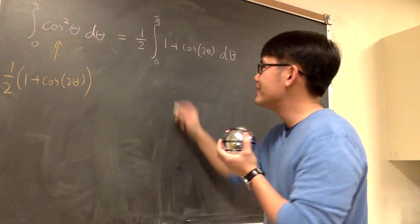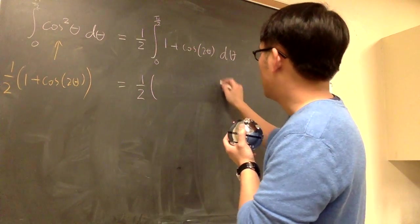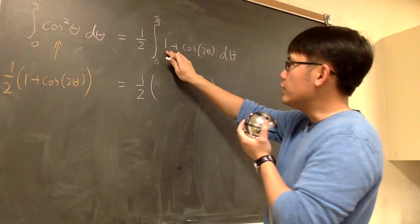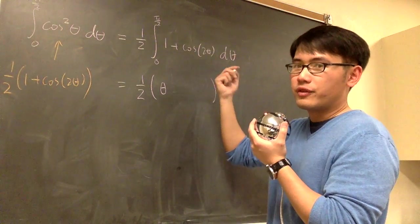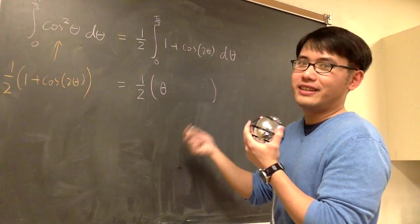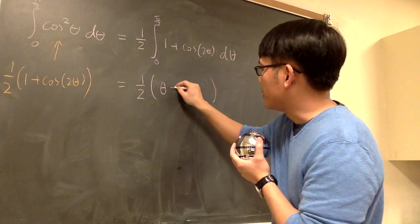And then we can integrate this. The 1 half sits on the outside. And then, let me open the parentheses. The integral of 1 is theta in the theta world. And how about what's the integral of cosine? Integral of cosine is sine. So we write this down. It's plus, by the way. Positive sine.